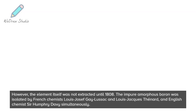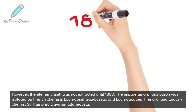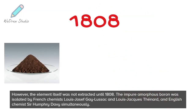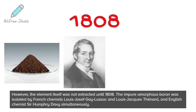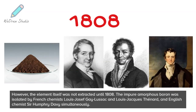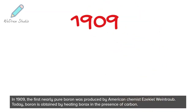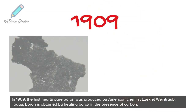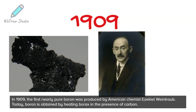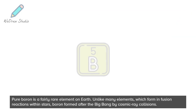However, the element itself was not extracted until 1808. Impure amorphous boron was isolated by French chemists Louis Joseph Gay-Lussac and Louis Jacques Thénard, and English chemist Sir Humphrey Davy, simultaneously. In 1909, the first nearly pure boron was produced by American chemist Ezekiel Weintraub. Today, boron is obtained by heating borax in the presence of carbon.